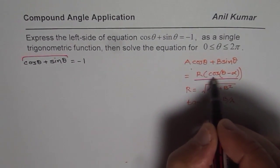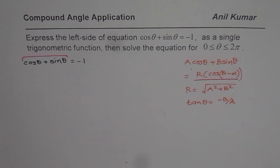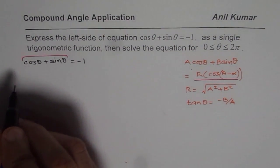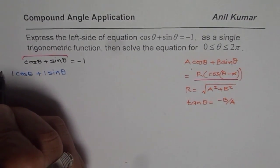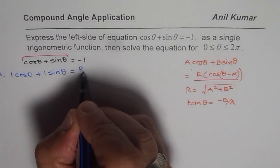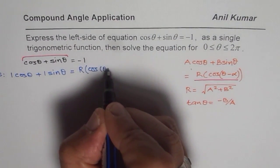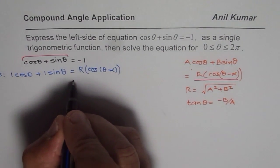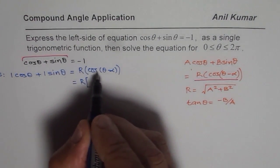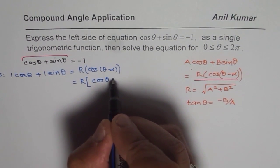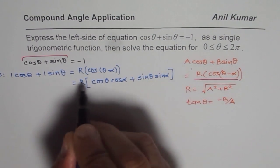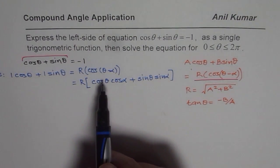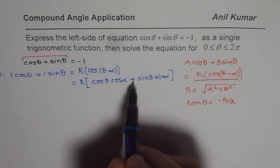We will use the compound angle formula. We treat the expression as 1·cosθ + 1·sinθ and write it as r·cos(θ - α). Expanding the right side: r·cos(θ - α) = r·[cosθ·cosα + sinθ·sinα]. So we can write this as r·cosα·cosθ + r·sinα·sinθ, using the compound angle identity cos(A - B) = cosA·cosB + sinA·sinB.